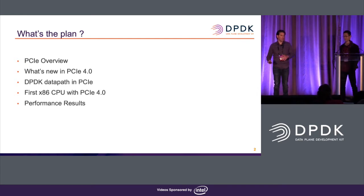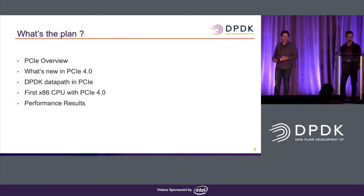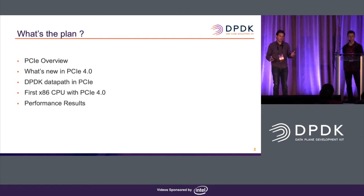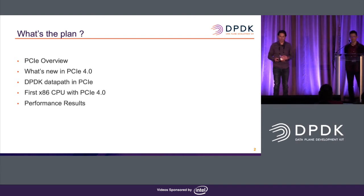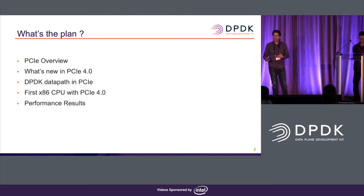Before we talk about Gen 4 and performance, we'd like to explain PCIe — the most common interface today. Every DPDK application starts with minus W and the PCIe function. We'll cover PCIe fundamentals, what's new in Gen 4, how the DPDK data path uses PCIe, how packets flow, and then the AMD CPU with Gen 4 and some performance results.